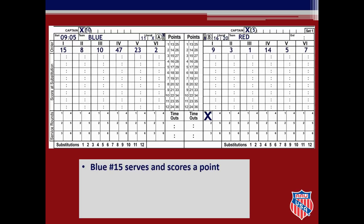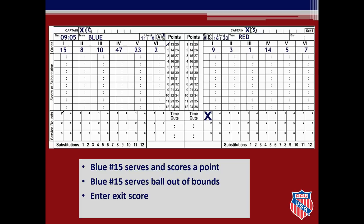Blue number 15 serves to start the match. When she serves the ball, you will place a small check mark on the 1 in the first service round box. Blue wins the first rally, so you slash point 1 in the blue points column. Blue number 15 serves again — there is nothing to do on the score sheet since the check is already in the box, but you must visually check that the correct player contacts the ball for service. The serve goes out of bounds, so number 15's term of service is over. Enter the exit score of blue in the checked service round box. The exit score is the total number of points in the points column for that team at the end of a term of service. The first referee awards the ball and a point to red, so you slash point 1 in red's points column. The score is now blue 1, red 1.